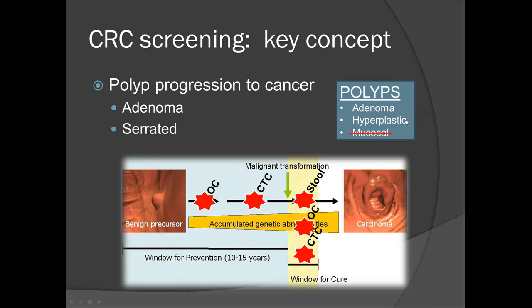Recently, we realized that a second subtype of polyps — hyperplastic polyps, which we always thought were benign — actually belongs to a larger family called serrated polyps. There are subtypes that actually do represent lesions that can go on to cancer and represent a minor pathway to cancer. Over the last five to eight years, this has been a real hot topic in colorectal cancer screening: how do we go about detecting and removing these lesions?